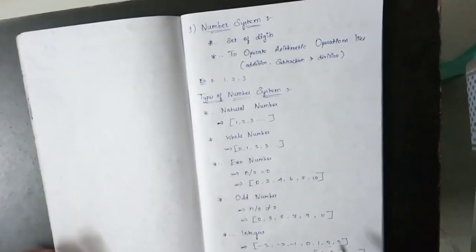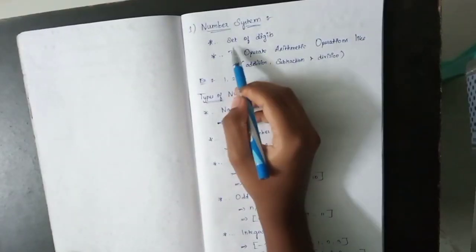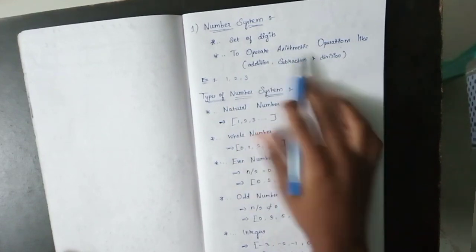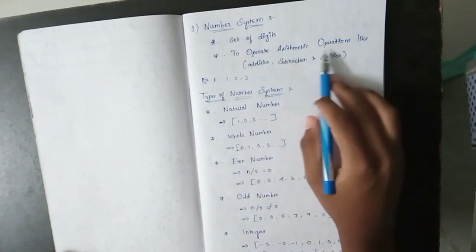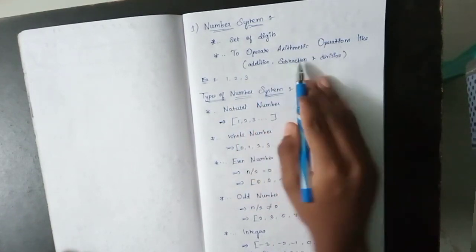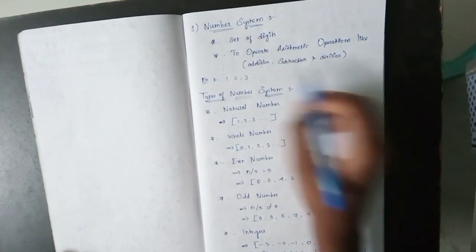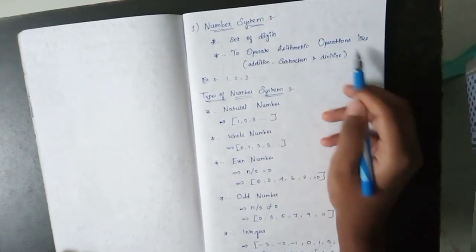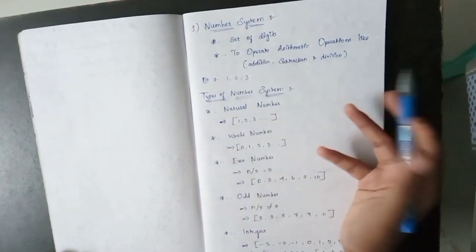First, number system. A number system is the set of digits used to perform arithmetic operations like addition, subtraction, and multiplication. We can use digits 1, 2, 3.